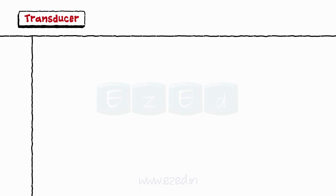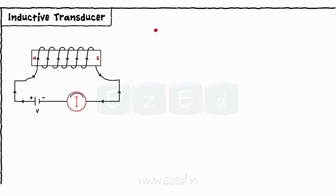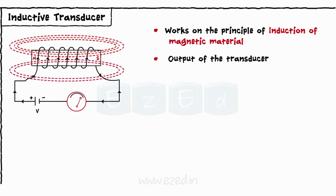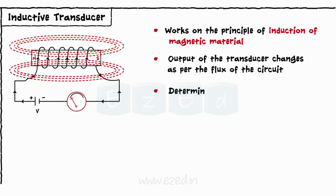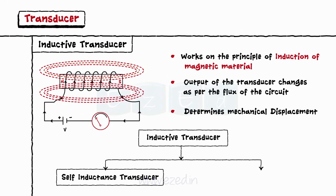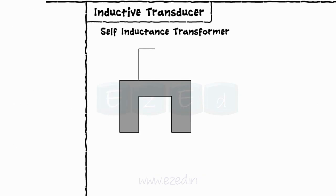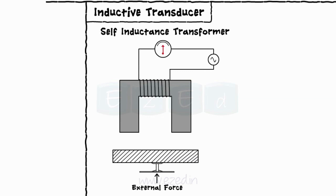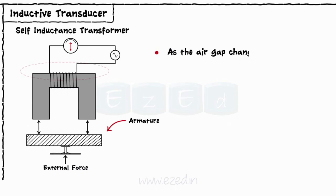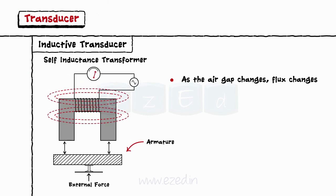The next type of transducer is an inductive transducer. Inductive transducers work on the principle of induction of magnetic material. The output of the transducer changes as per the flux of the circuit, thereby determining the mechanical displacement of an object. There are two types: self-inductance transducer and mutual inductance transducer. In a self-inductance transducer, the magnetic material is connected to the electrical circuit and excited by alternating current. At the bottom, there is another magnetic material that acts as an armature. As the armature is moved, the air gap between the two magnetic materials changes, the flux changes, and thus the inductance and output of the circuit change. The output meter directly gives the value of the input mechanical quantity.